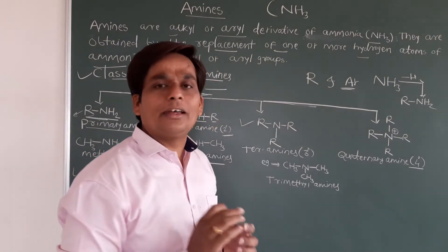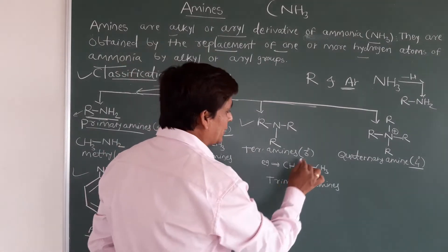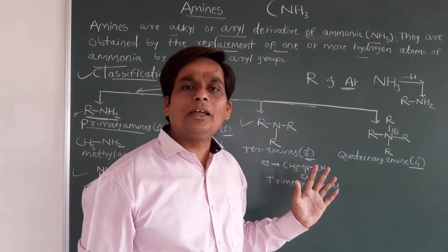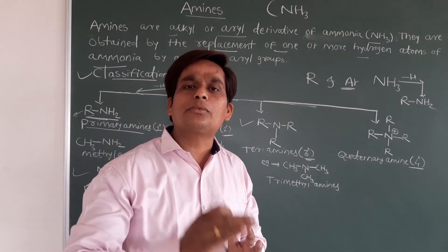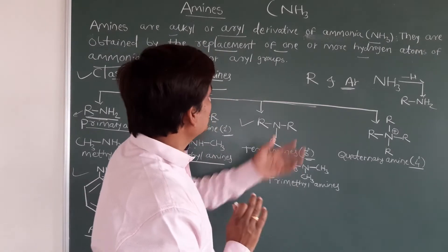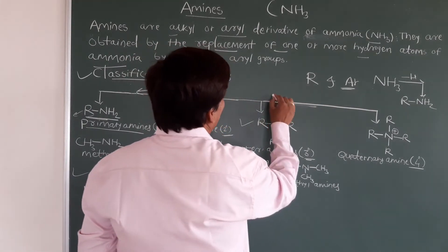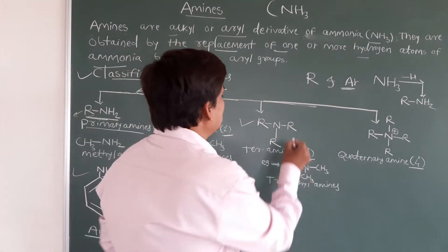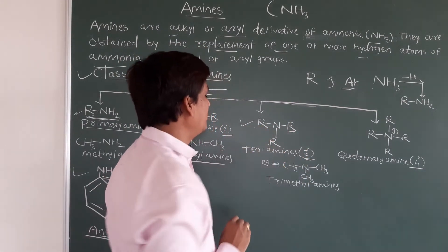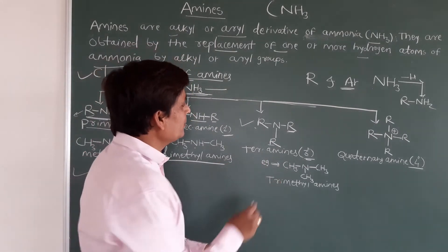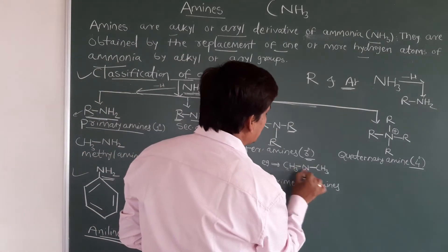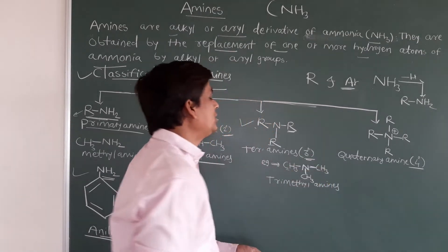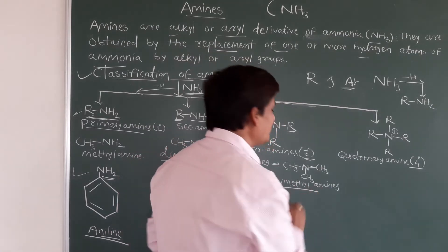Now see the tertiary amines, represented as 3°. In tertiary amines, from ammonia, three hydrogens are replaced by three alkyl or aryl groups. From NH3, all three hydrogens are removed and substituted with three R groups, giving a tertiary amine. For example, if you take three CH3 groups attached to nitrogen, that is trimethylamine.